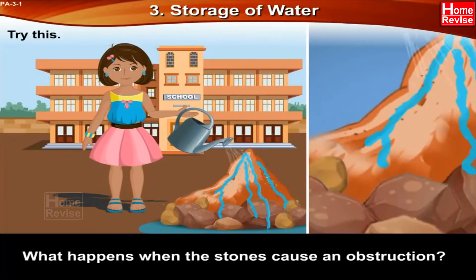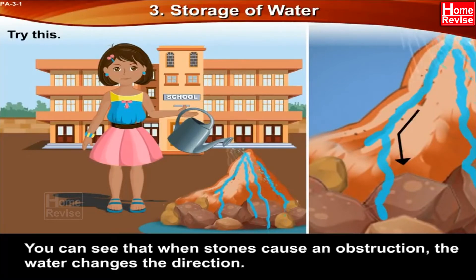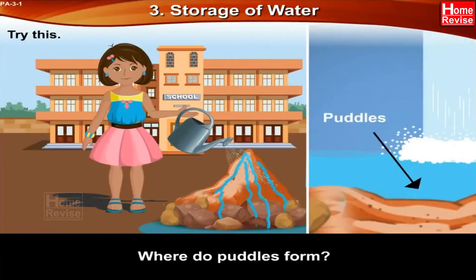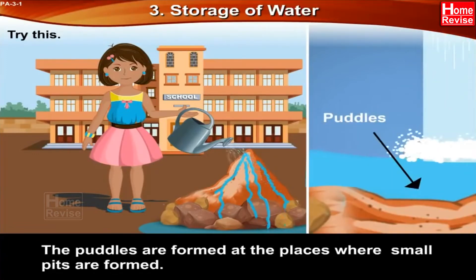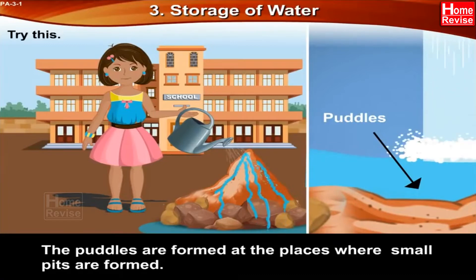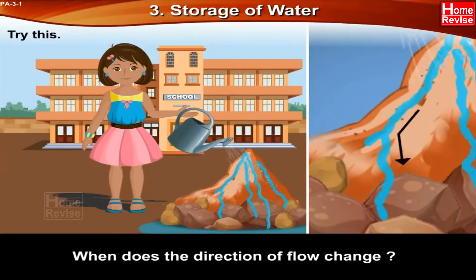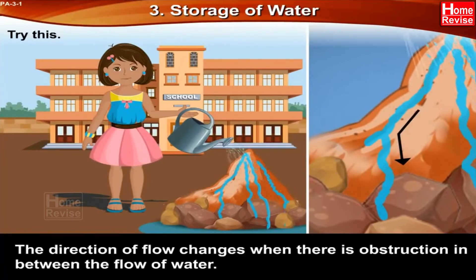What happens when the stones cause an obstruction? You can see that when stones cause an obstruction, the water changes direction. Where do puddles form? Puddles are formed at the places where small pits form. When does the direction of flow change? The direction of flow changes when there is an obstruction in the flow of water.